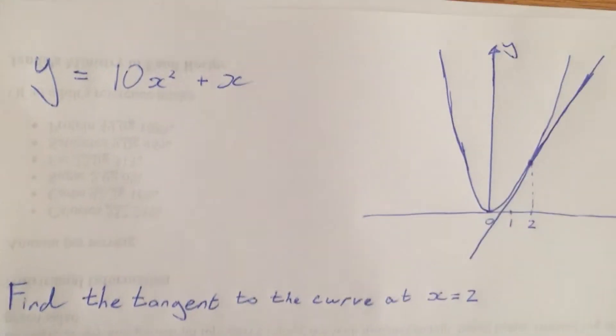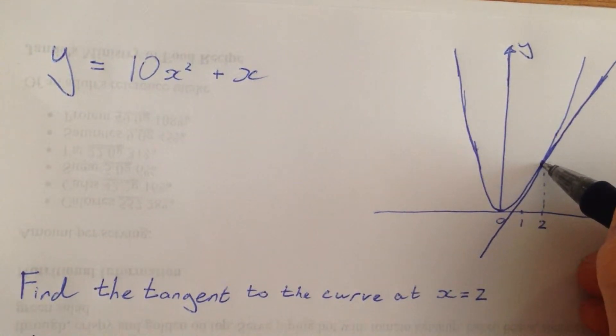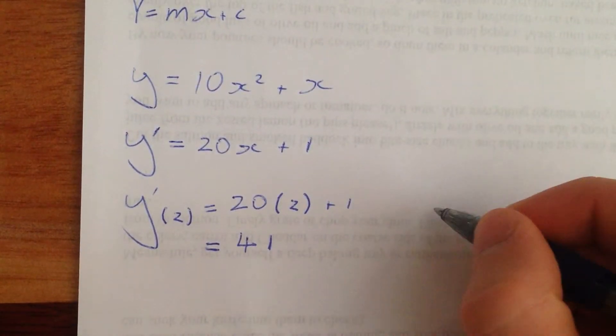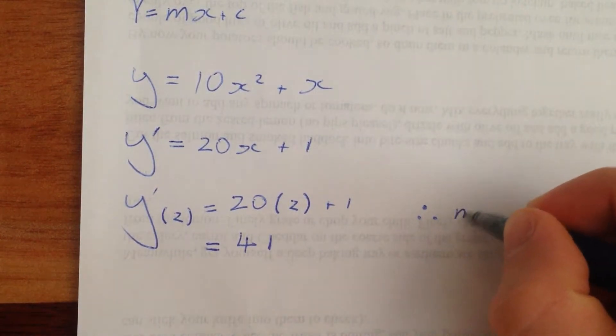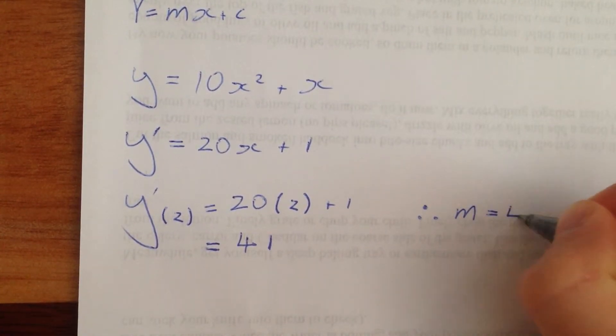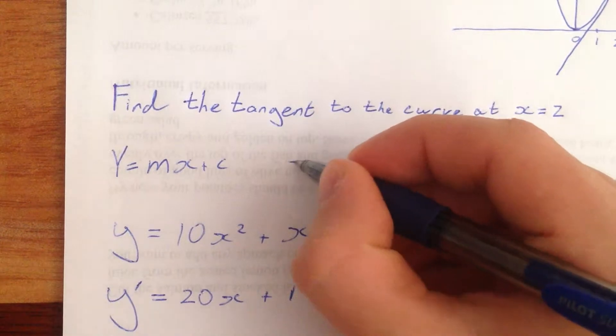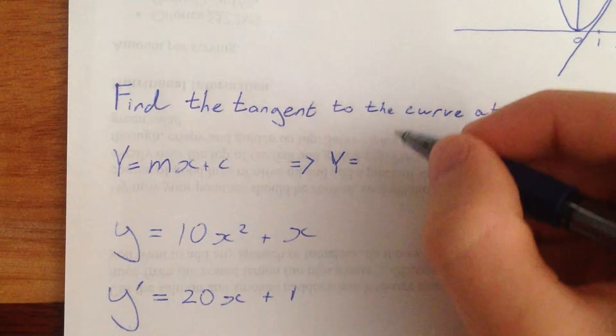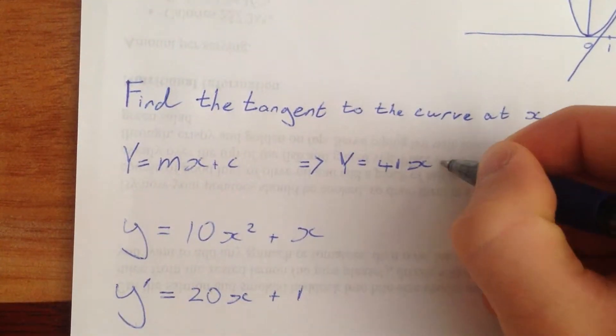So that means the gradient or the steepness of this line and this curve at this point is going to be 41. So therefore the gradient is equal to 41. You can even write this in here. y equals 41x plus c.